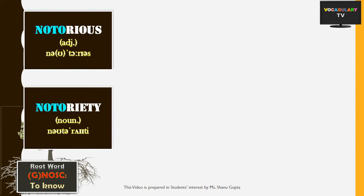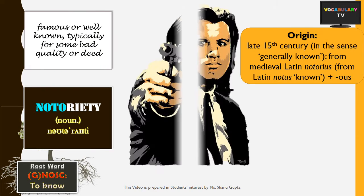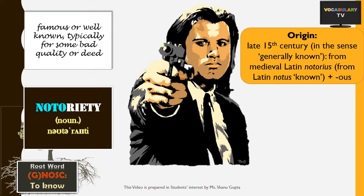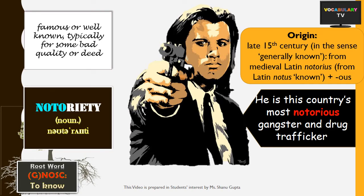Another word from the root 'notio' meaning 'known' is 'notorious'. Notorious describes someone who is well-known but in a bad sense. A notorious person would be someone like a well-known criminal, as opposed to a well-known actor, whom you would rather describe as famous. For example: he is this country's most notorious gangster and a drug trafficker.